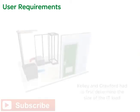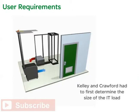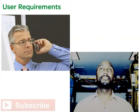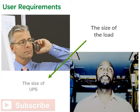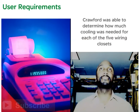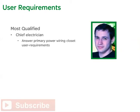In order to determine how much cooling was needed for the new wiring closets, Kelly and Crawford first had to determine the size of the IT load. These figures allowed Crawford to properly size the power and cooling required for the room. The size of the load helped determine the size of the UPS required. By calculating the UPS size and considering amounts of solar gain, lights, fans, and other heat sources, Crawford determined how much cooling was needed for each of the five wiring closets. Jason Stewart, Acme's chief electrician, was deemed the most qualified person to address primary power, UPS, and PDU wiring closet user requirements.